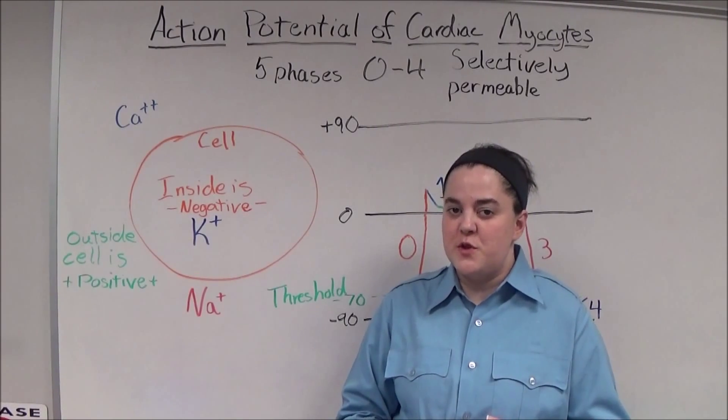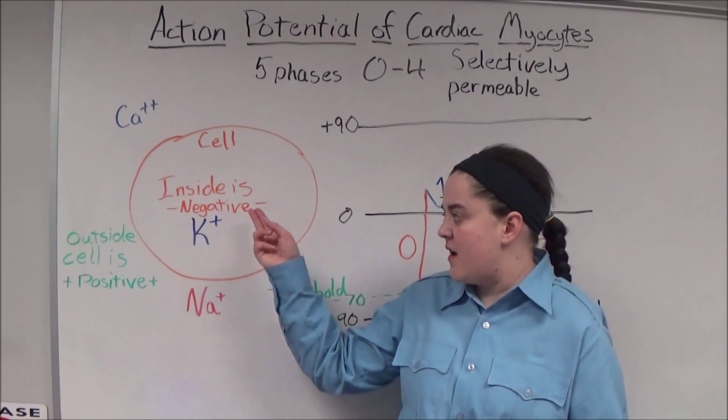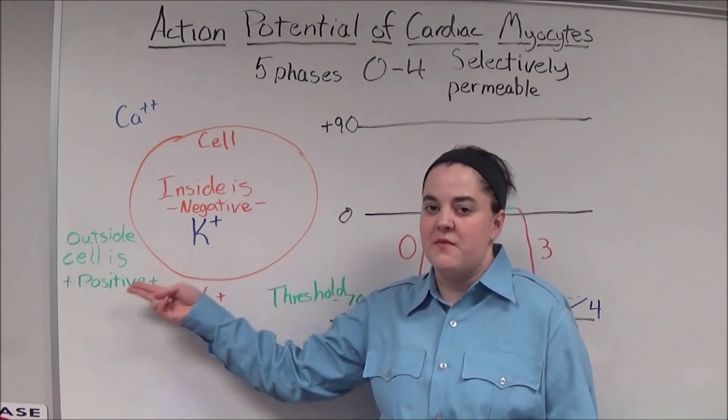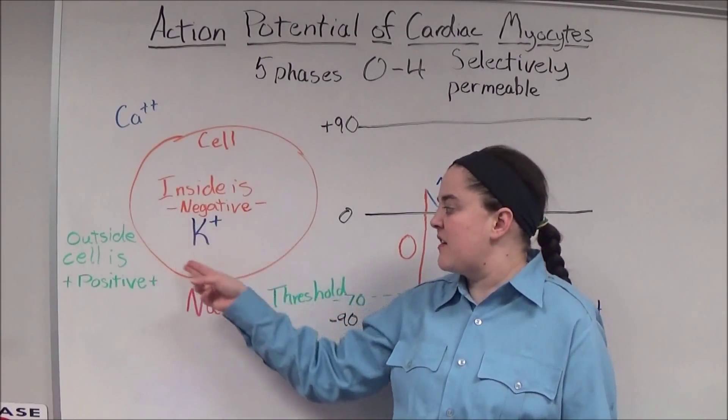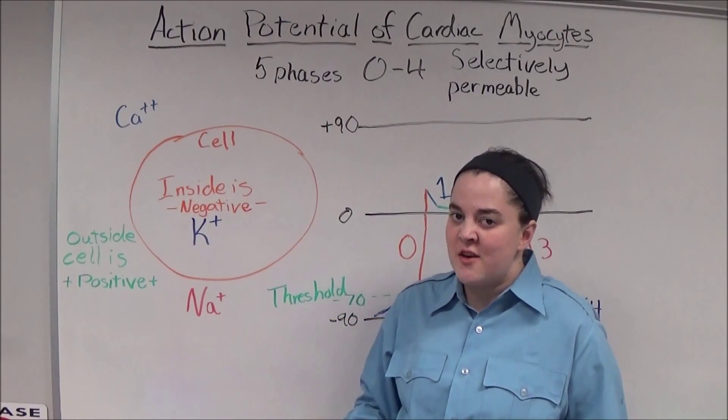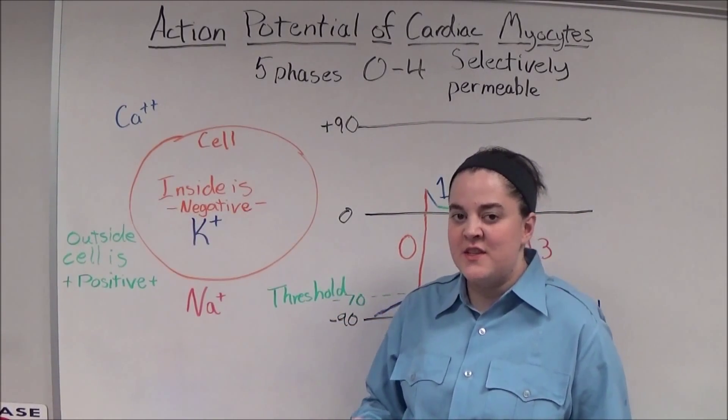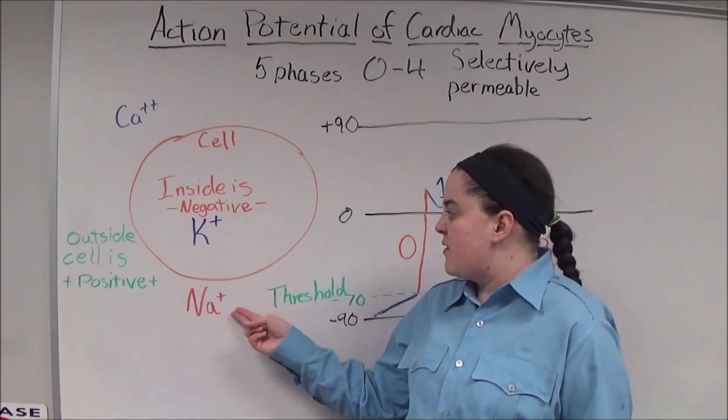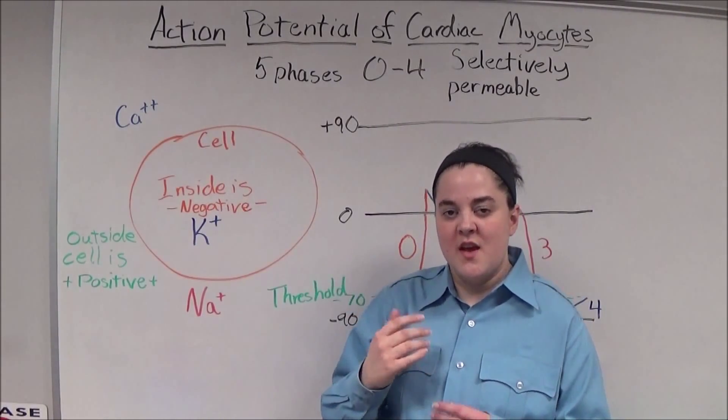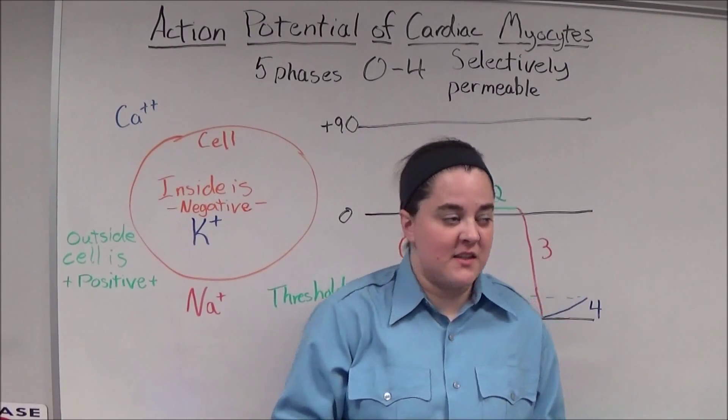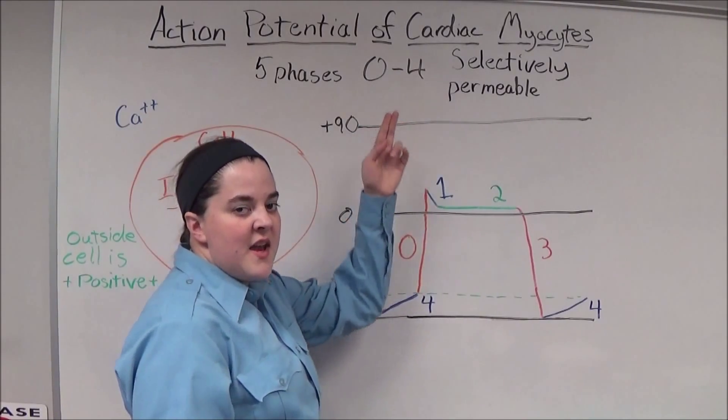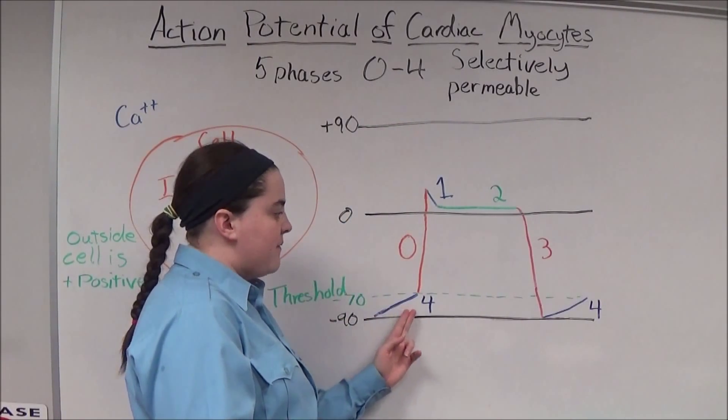There is an electrical difference between the inside of a cardiac myocyte, which is negative, and the outside of a myocyte, which is positive. The cell membrane is selectively permeable, meaning that only certain ions can get in and out of the cell at specific times. The main ions involved are sodium, potassium, and calcium. The cardiac action potential has five different phases, labeled zero through four, and each cycle starts and ends with phase four.